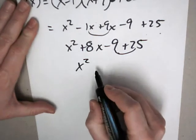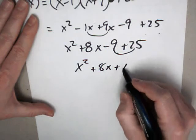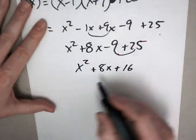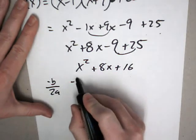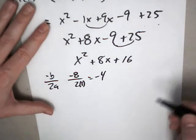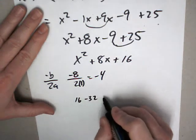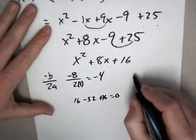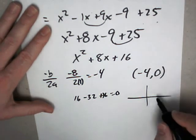Now these go together. x squared plus 8x plus 16. So negative b over 2a. Negative 8 over 2 times 1. Negative 4. Plug that back in. You get 16 minus 32 plus 16. That's 0. So negative 4, 0 is your vertex.